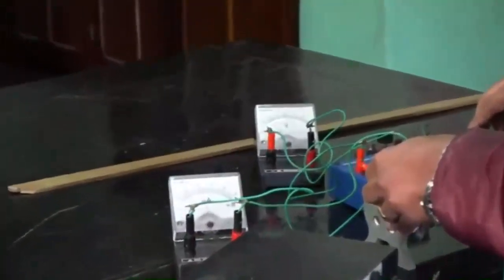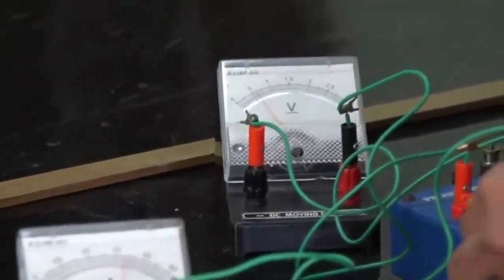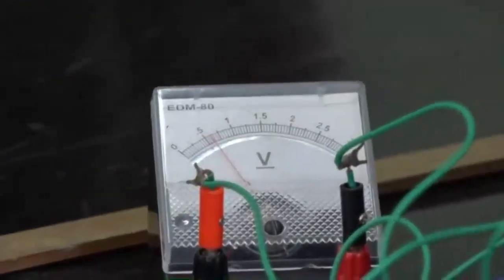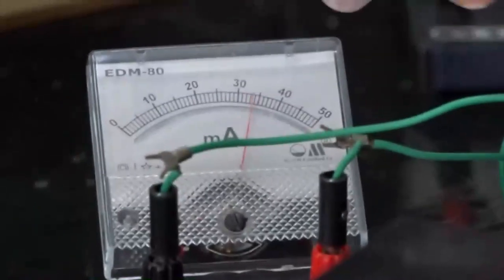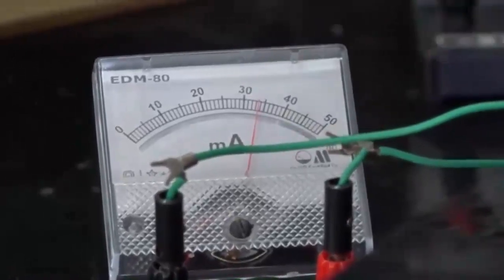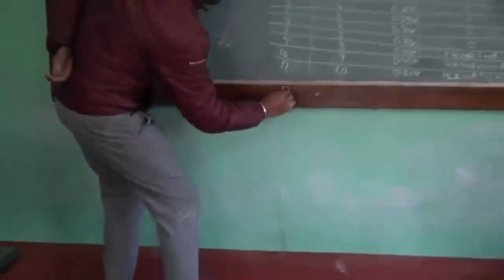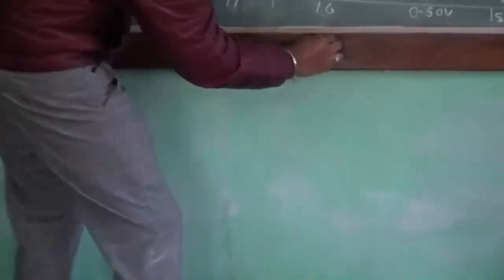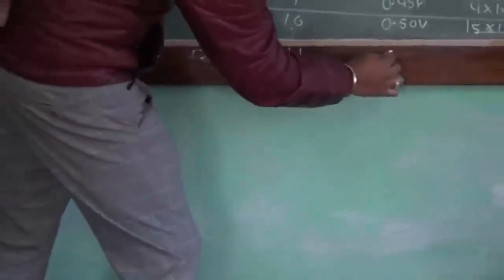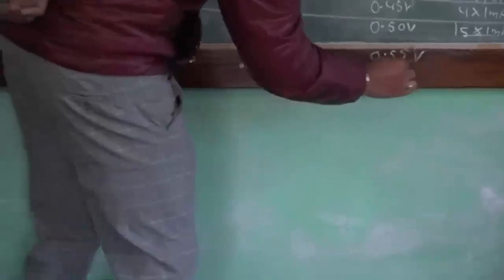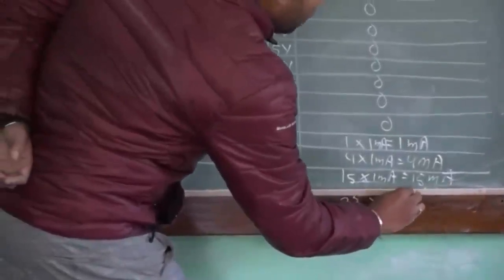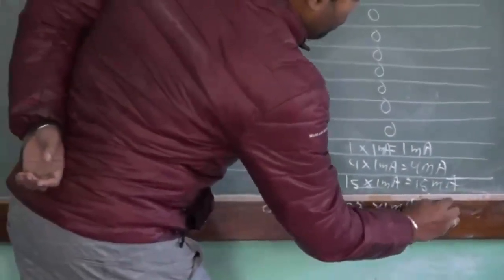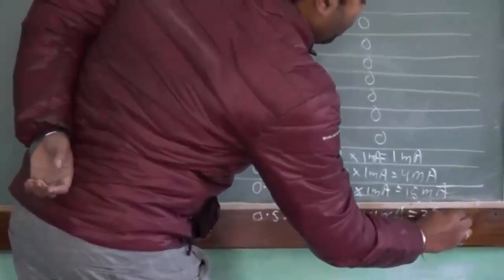For the 11th division in the voltmeter, that is 0.55 volts, we are getting 33 divisions, that is 33 into 1 milliampere, which is 33 milliamperes.